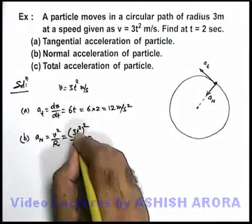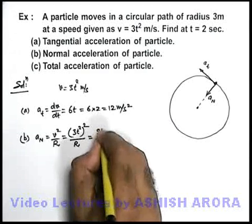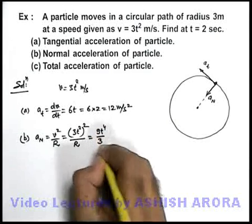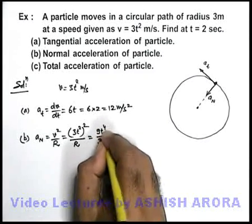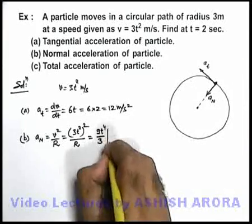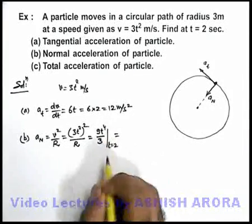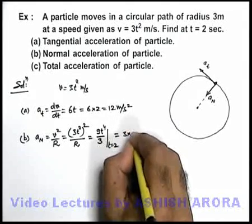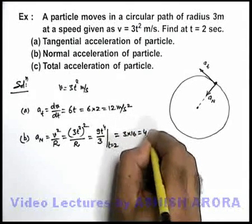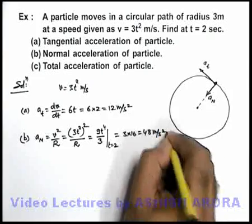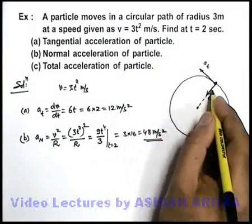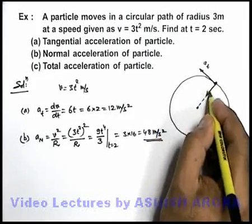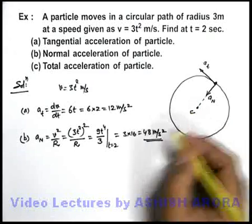So on solving this we'll be getting it is 9t⁴ upon 3. And if we put t equal to 2 seconds, at t equal to 2 seconds we'll be getting it as 3 into 16, that'll be 48 meters per second square. This is the normal acceleration the particle will be having, directed toward the centre of circle.